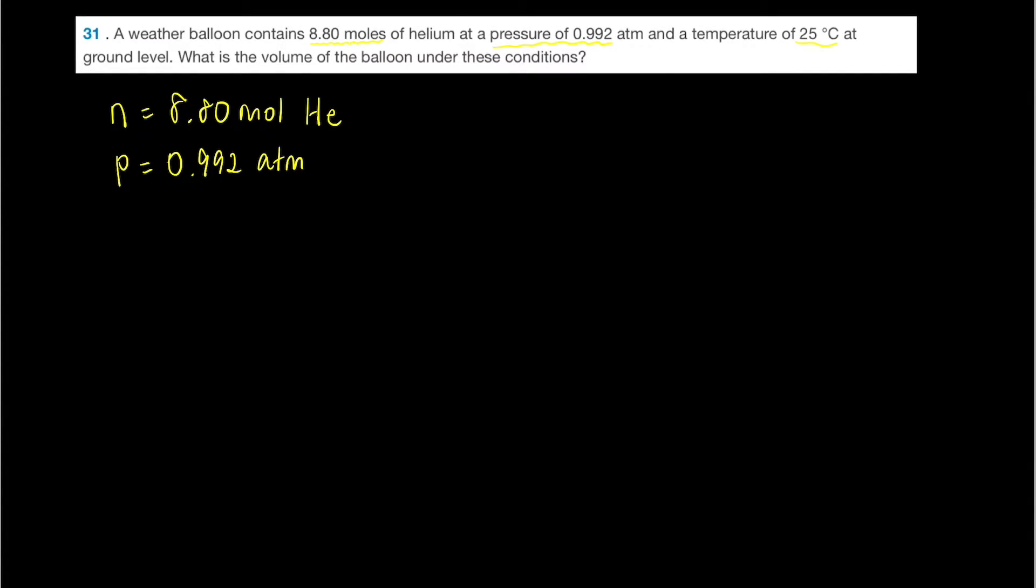The temperature is 25 degrees Celsius. Whenever we have degrees Celsius we need to immediately add 273 to that to make sure that we convert it to Kelvin, which is the correct type of unit we want to use in all of these gas law problems.